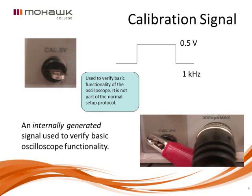There's a calibration signal that varies a little bit from scope to scope, but generally it's a standard frequency of one kilohertz square wave, usually 0.5 volts amplitude. It's basically used to give a quick check — can the scope display a signal? There's usually a connection right on the front panel; simply connect your scope lead signal input to that to check if it's working.